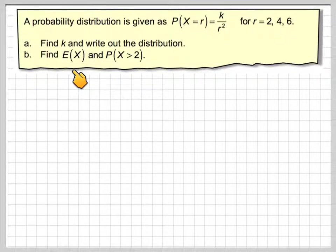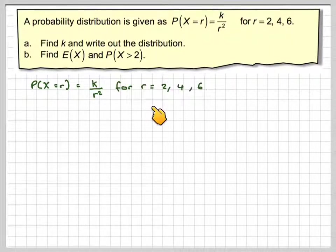Find the expected value of X and the probability that X is greater than 2. So the probability X is equal to r is k/r² for r equal to 2, 4 and 6.